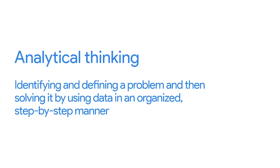Let's talk about analytical thinking. Analytical thinking involves identifying and defining a problem and then solving it by using data in an organized, step-by-step manner. So as data analysts, how do we think analytically? Well, to answer that question, we will now talk about a second set of five.